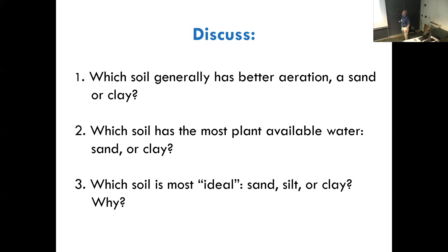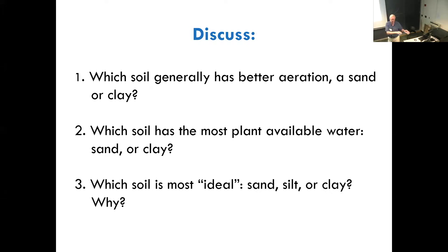Which soil generally has better aeration — sand or clay? Sand, because of the larger particles. Which soil has the most plant-available water? A loam — that is the correct answer. The ideal soils tend to be in between. Sands have large pores and lots of aeration; clays have very small pores with lots of water retention but poor aeration and water transmission. These intermediate loams and silts are the best — and that's typically what you find in great agricultural areas: the Nile Delta, the Indo-Gangetic Plain, the North China Plain — all those intermediate soils.